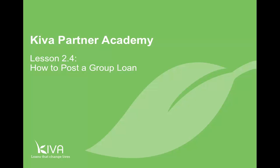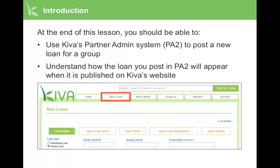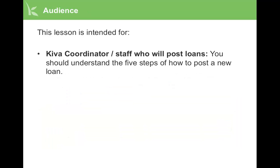Welcome to the Kiva Partner Academy. This lesson explains how to post a new loan for a group. At the end of this lesson, you should be able to use Kiva's partner admin system, PA2, to post a new loan for a group, and understand how the loan you post in PA2 will appear when it is published on Kiva's website. This lesson is intended for the Kiva coordinator and any other staff who will post loans.